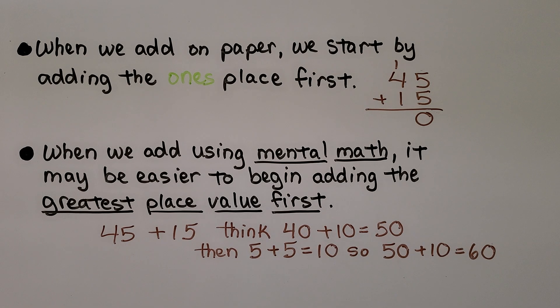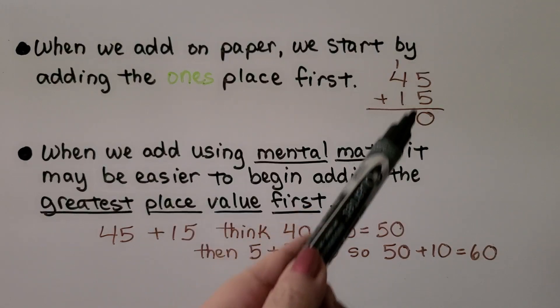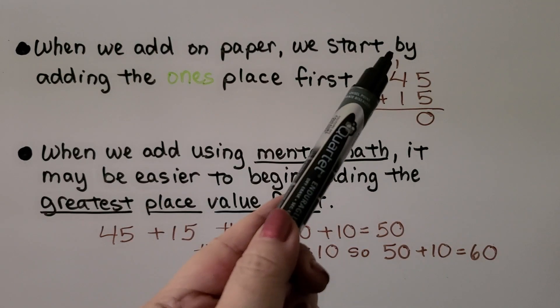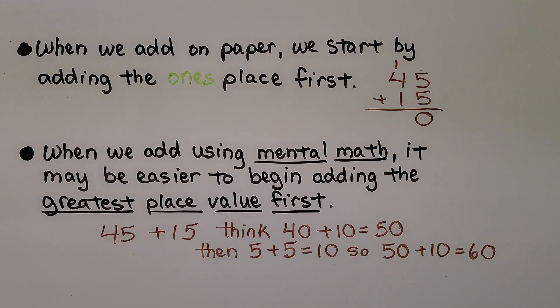When we add on paper, we start by adding the ones place first. Five plus five is 10. We regroup the 10 and write the zero in the ones place.